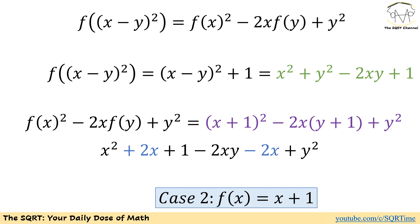Case 2: f of x equals x plus 1. The left-hand side becomes (x minus y) squared plus 1, which simplifies to x squared plus y squared minus 2xy plus 1. For the right-hand side, f of x squared becomes (x plus 1) squared, then minus 2x times f of y, where f of y equals y plus 1, plus y squared. Simplifying, the 2x terms cancel and both sides are equal. So case 2 is also acceptable.